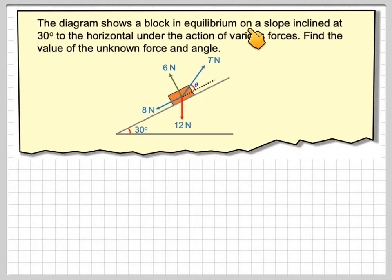The diagram shows a block in equilibrium on a slope inclined at 30 degrees to the horizontal under the action of various forces. Find the value of the unknown force and the angle. So we've got to find the value of this tension here and of this angle here.